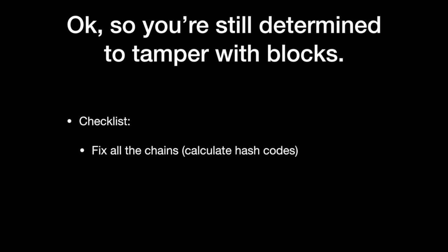Okay, so you're still determined to tamper with blocks. Here's a checklist. First, you have to fix all the chains, which is just calculate all the new hash codes. Then you've got to rebuild the blocks, provide the proof of works. And you also have to take over at least 50% of all the nodes. In addition, even if you do manage to take over 50% of all the nodes, you'll need to provide proof of works to change all the blocks in the blockchains of each and every node. As you can see, it's almost impossible to change information stored on this blockchain. And that's why they're so awesome.